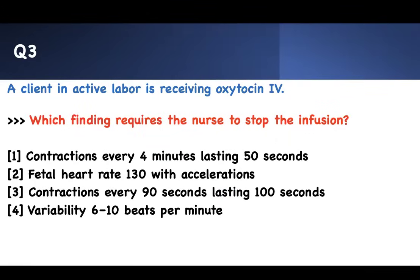Number three: the client in active labor is receiving Pitocin (oxytocin). Which finding requires the nurse to stop the infusion? You have to know the indications and complications associated with Pitocin, and what to look for when a patient is receiving it. The key words are your contractions — the duration of each contraction and the frequency from one contraction to another. Frequency means how often do you contract, and duration means how long is one contraction.